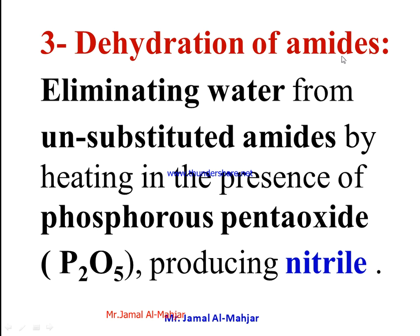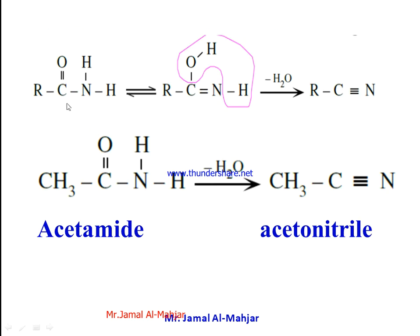The last reaction is the dehydration of amides. It means eliminating water from an unsubstituted amide by heating in the presence of phosphorus pentoxide (P₂O₅), producing a nitrile. One hydrogen transfers to the oxygen forming an unstable intermediate — a tautomer — giving an H and OH group that can be removed as H₂O, and we get the nitrile.